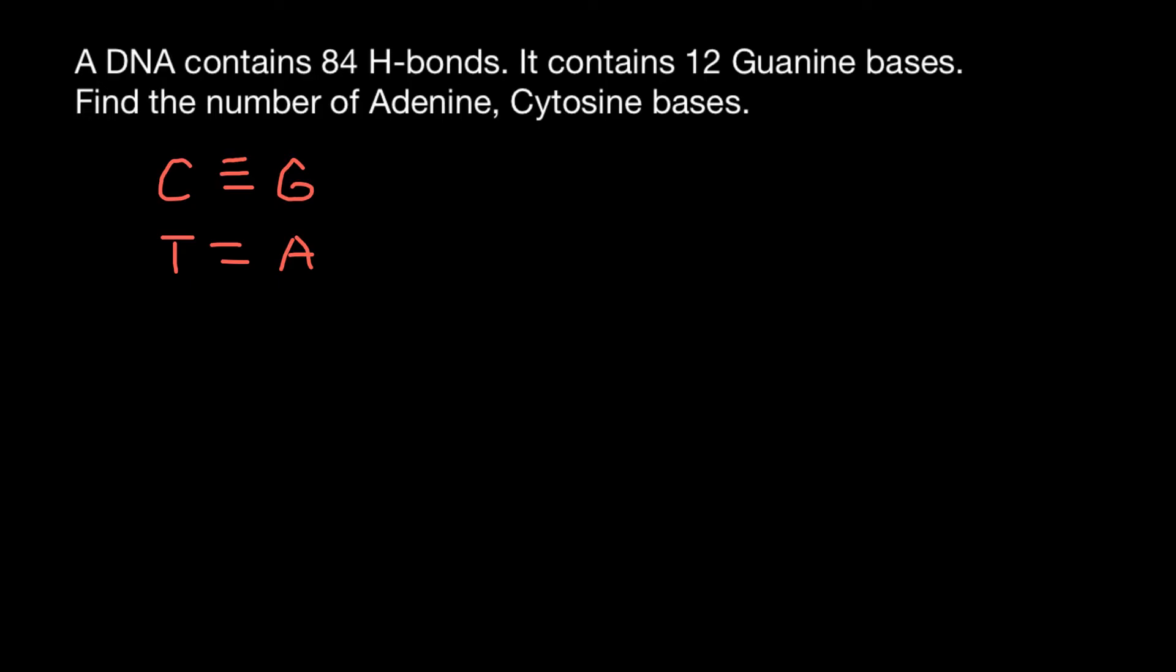So now it is very easy to solve this problem. We know that we have 12 guanine bases and we know that guanine always base pairs with cytosine. And we instantly know that we also have 12 cytosine bases.